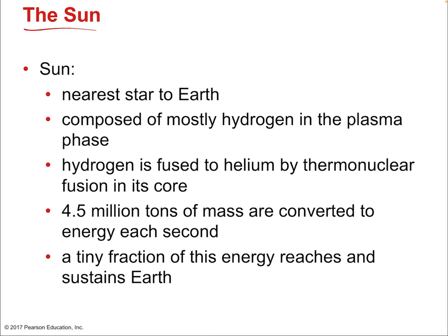The sun is the nearest star to Earth — by far. The second-closest star is about three and a half light years away, which is an incredibly far distance. The sun is composed mostly of hydrogen in the plasma phase. Plasma means an ionized gas — there are no electrons in orbit around any nuclei; all the atoms are just pure nuclei because it's such a high-energy state.